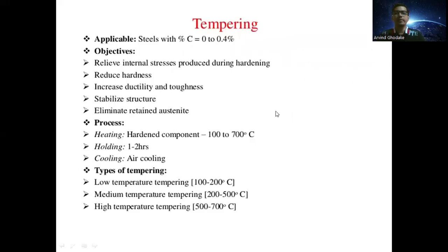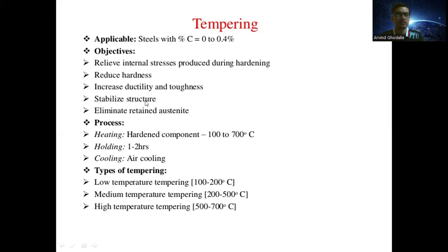Tempering is generally applicable for steel with a carbon percentage of 0 to 0.4%. The objectives of tempering are: to relieve or remove internal stresses produced during hardening; to reduce the hardness of the material or steel; to increase ductility and toughness of the steel; to stabilize the structure of steel; and to eliminate or reduce retained austenite from the steel after martensitic transformation.